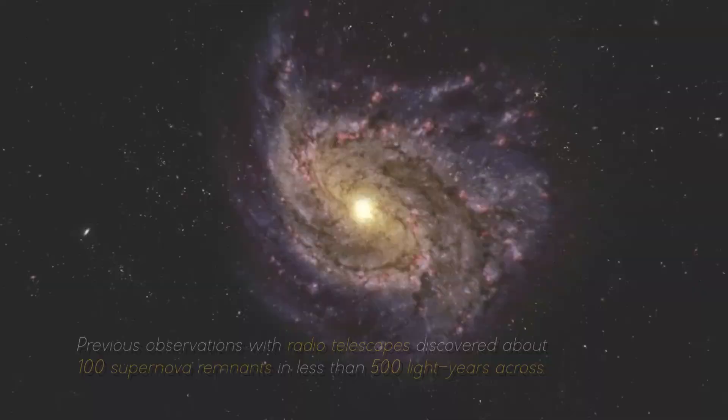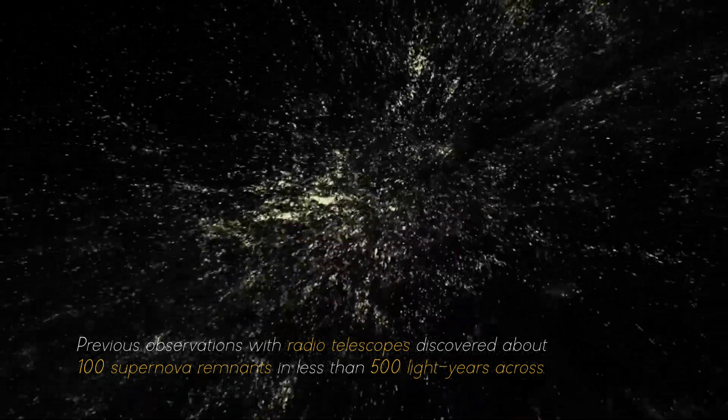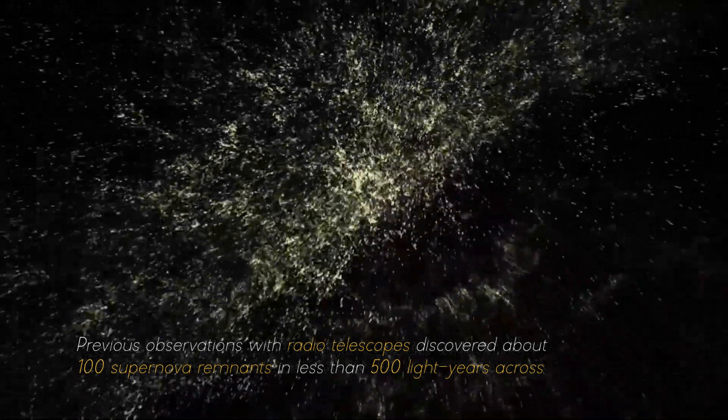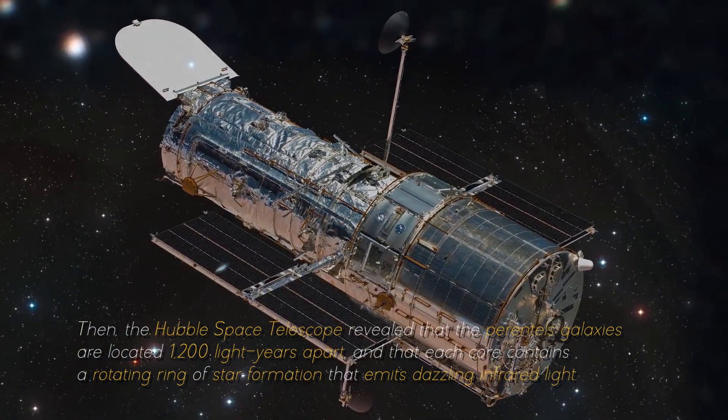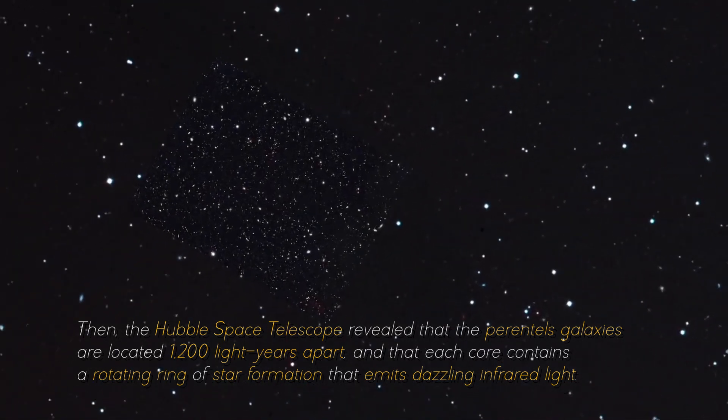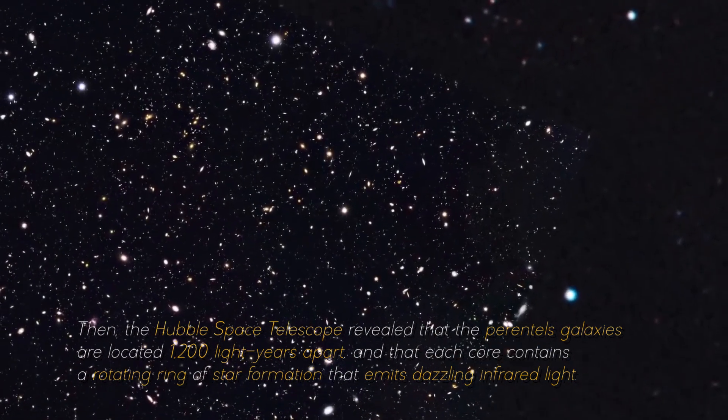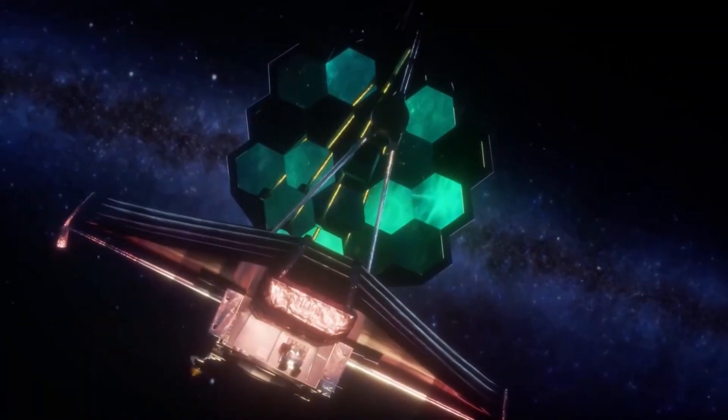Surprisingly, this small area contains as much gas as the entire Milky Way. Previous observations with radio telescopes discovered about 100 supernova remnants in less than 500 light-years across. Then, the Hubble Space Telescope revealed that the parental galaxies are located 1,200 light-years apart, and that each core contains a rotating ring of star formation that emits dazzling infrared light.